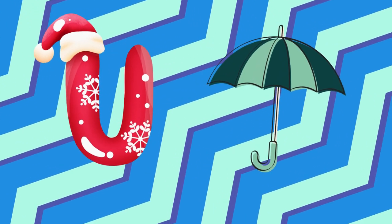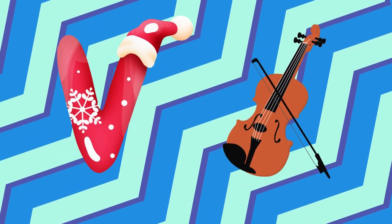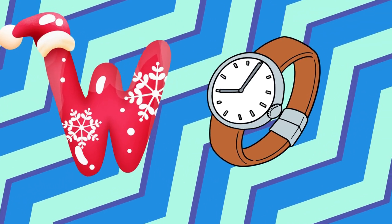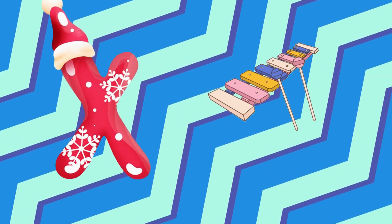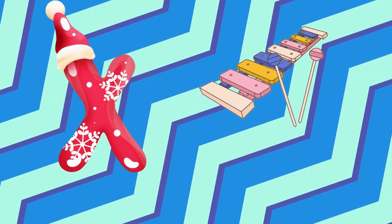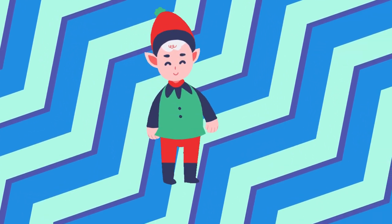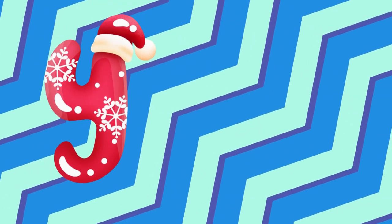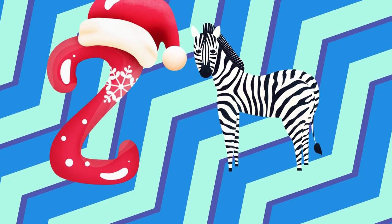U is for umbrella, u-u-u-umbrella. V is for violin, v-v-violin. W is for watch, w-w-watch. X is for xylophone, z-z-xylophone. Y is for yellow, ye-ye-yellow. Z is for zebra, z-z-zebra.